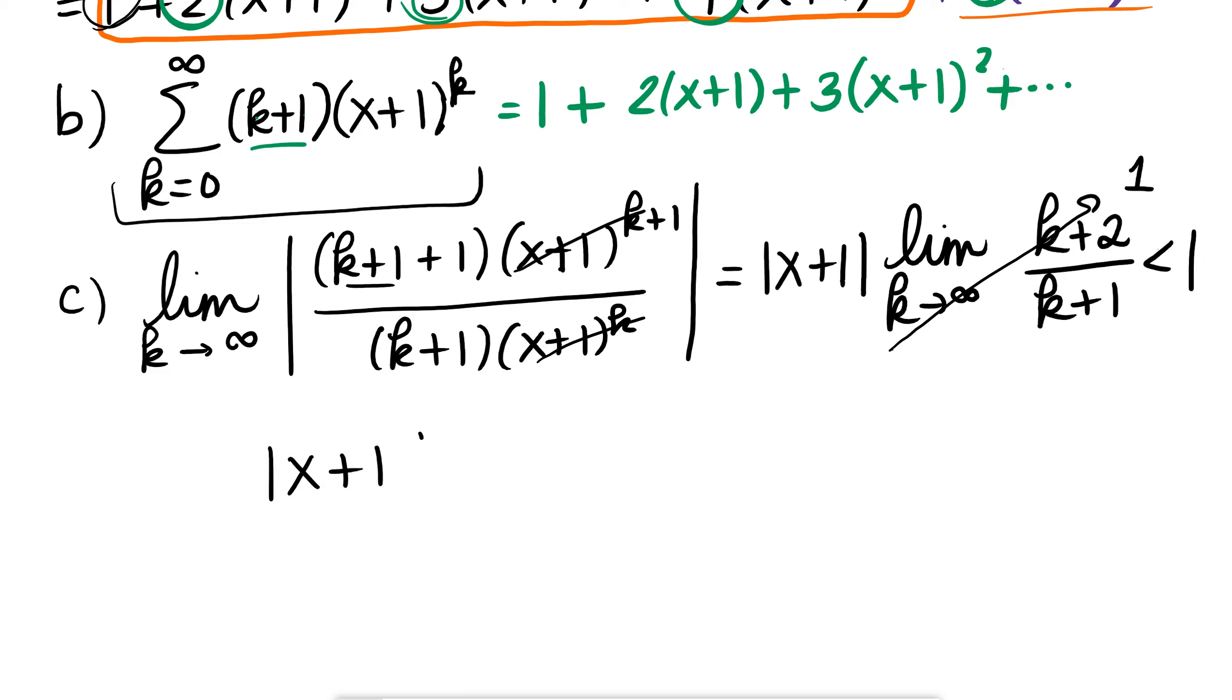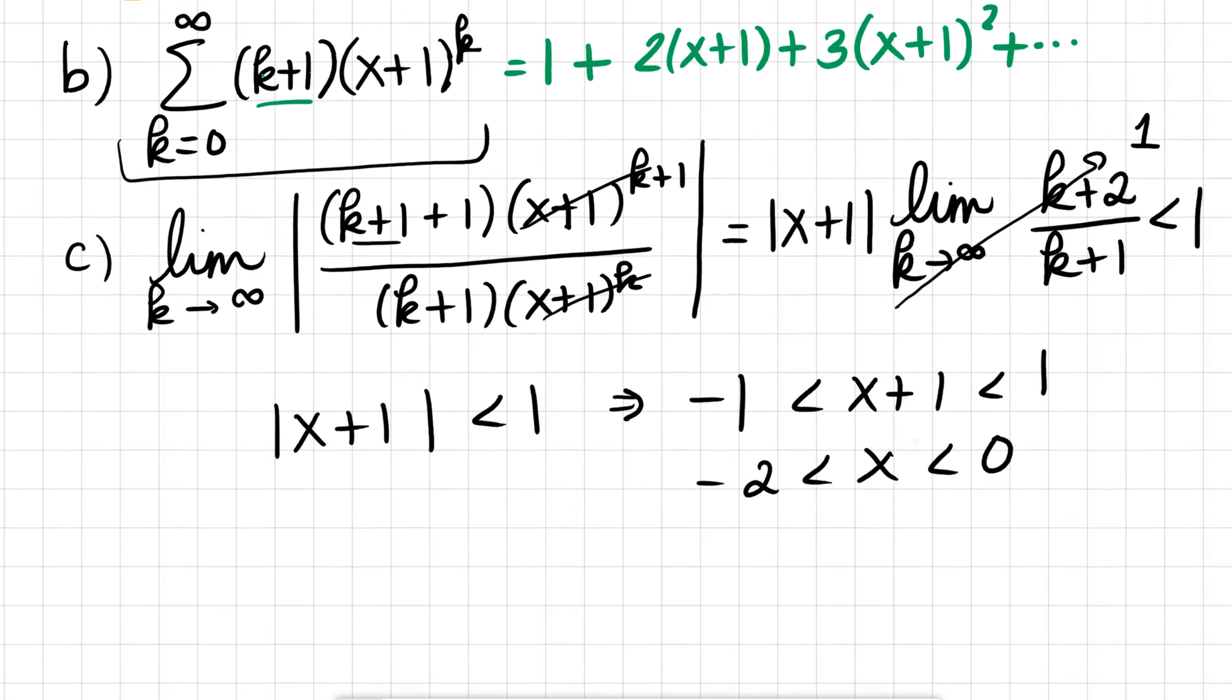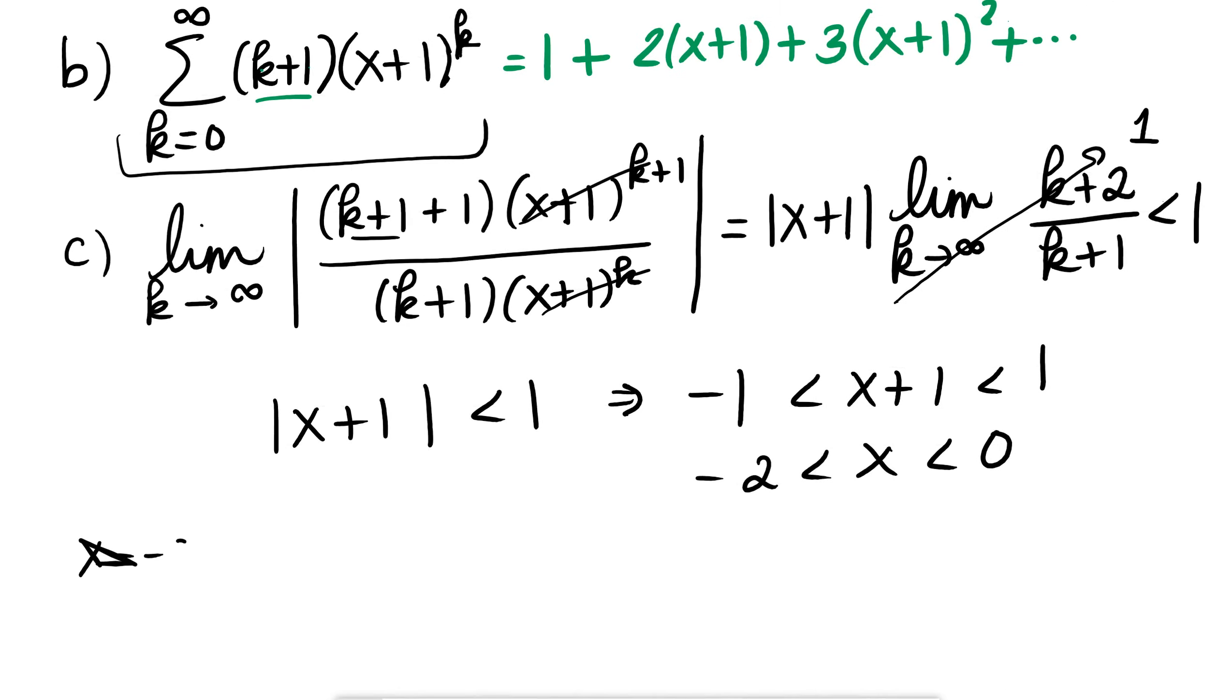Let's check. If k is 0, I get 0 plus 1, which is 1. x plus 1 to the 0 is 1, so that works. Plus, when k is 1, I get 2 times x plus 1. That was a fun one. When k is 2, I get 2 plus 1, which is 3 times x plus 1 squared, and so on and so forth. So, yeah, I'm pretty confident in my summation notation that I have found for part b. And then determining the interval of convergence, we're just going to go back to what we did in the last section.